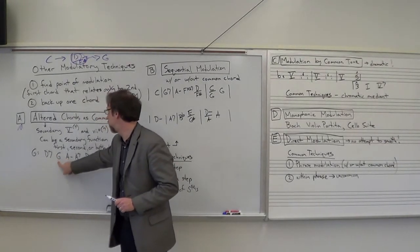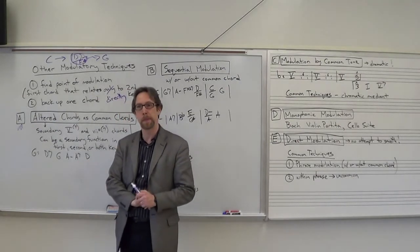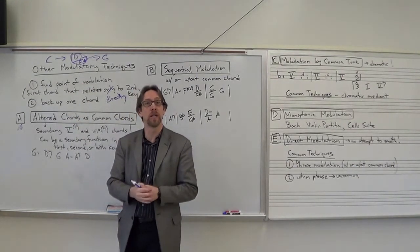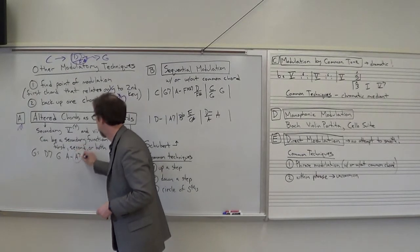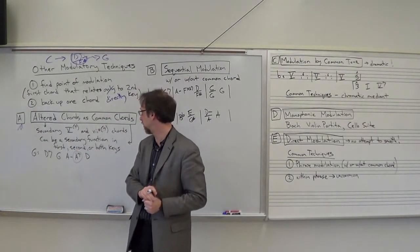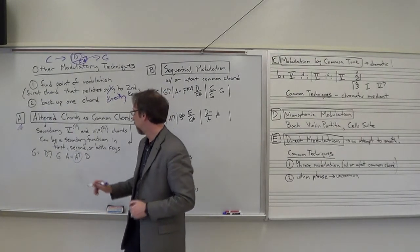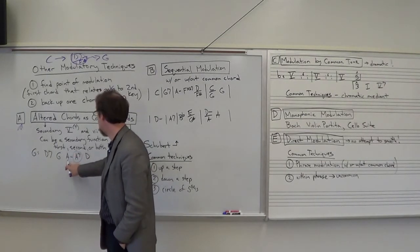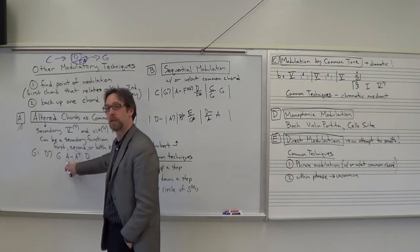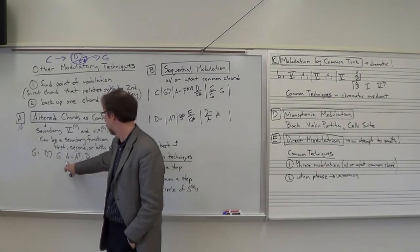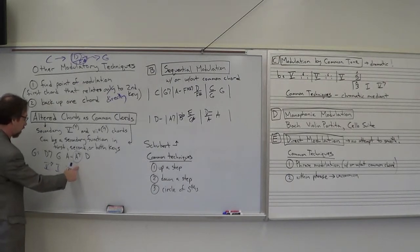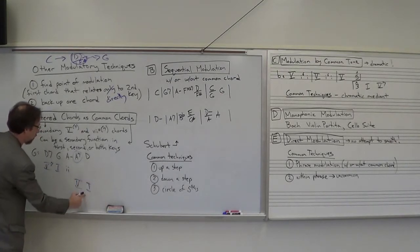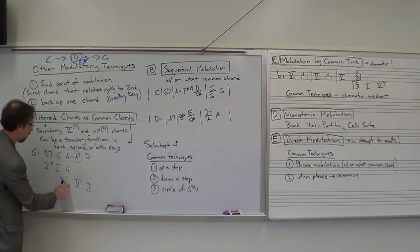Now, what if we find our point of modulation and it doesn't belong to both keys? And that is entirely possible. Let's take a look at an example that does exactly that. We're in the key of G major. I have a D7 to G to A minor to A7 to D. So, first step one, where is the point of modulation? In other words, where is the first chord that's not diatonic to the key of G major? A7. That is my point of modulation. Then you can say, oh, I'm going to go back one. A minor. Well, A minor is not common to D major and G major.